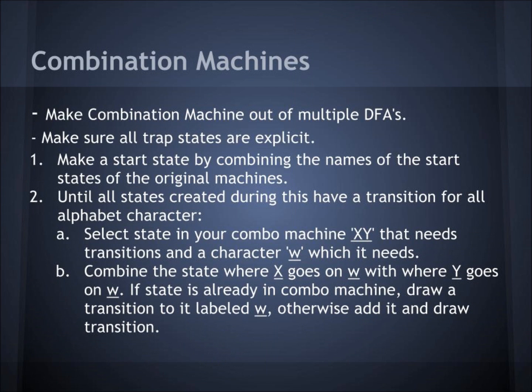Next, we have combination machines. You make a combination machine out of multiple DFAs. First, you make sure all trap states are explicit. You make a start state by combining the names of the start states of the original machines. Then, until all states created have a transition for all alphabetic characters, you select a state XY that needs a transition and a character W. Combine the state where X goes on W with where Y goes on W. If the state is already in the combo machine, draw a transition to it labeled W; otherwise, add it and draw a transition.